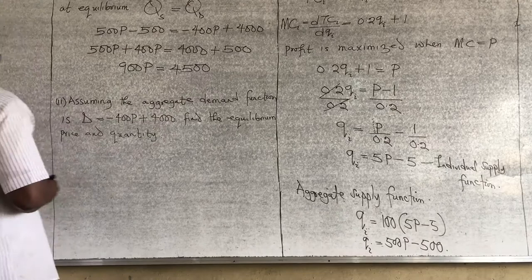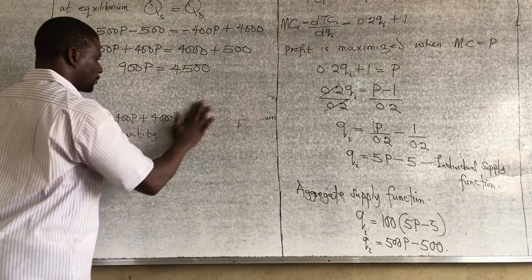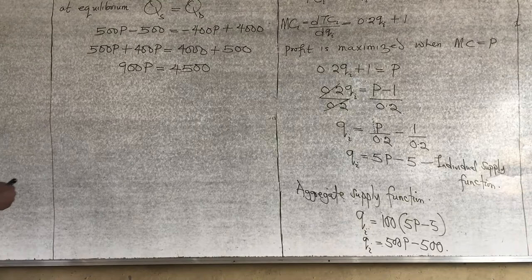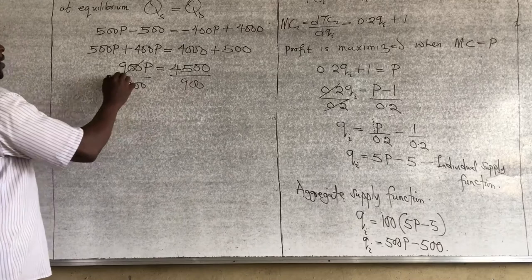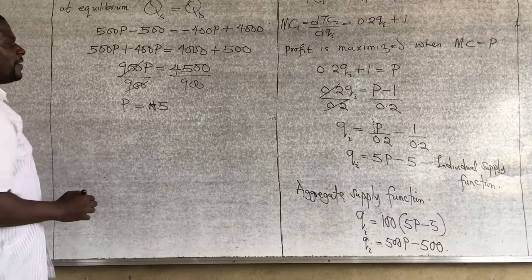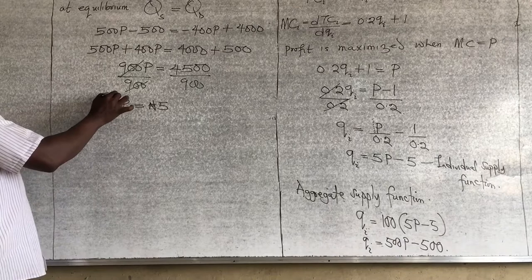With 900P equals 4500, we can get the value of P. Dividing both sides by 900, our price equals 5 Naira. The equilibrium price is 5 Naira.